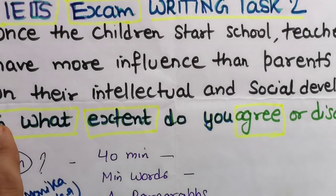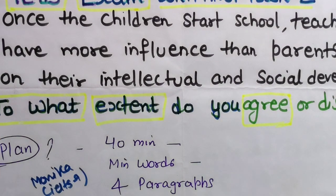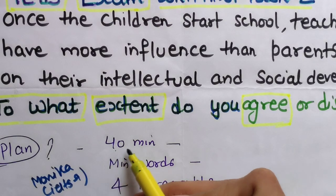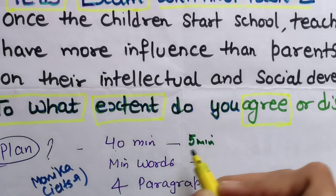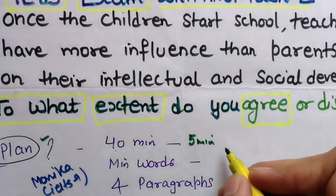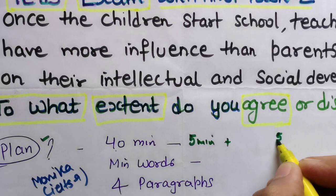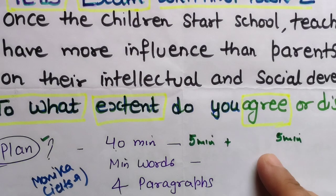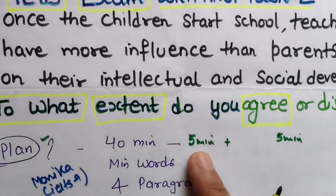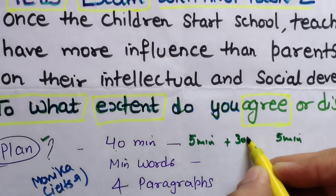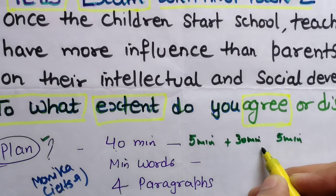Now, how to plan: as you know, 40 minutes are available for Writing Task 2. The first five minutes you are going to do planning, and the last five minutes you will reread your essay to find errors, mistakes, grammar issues, and verb usage. That means we have 30 minutes left to write the essay.